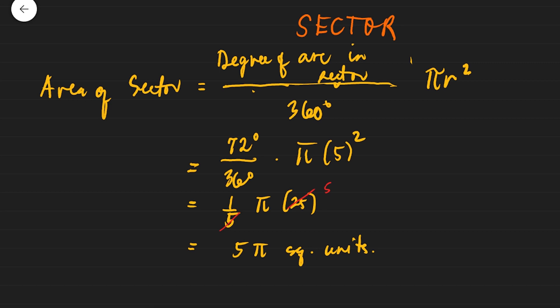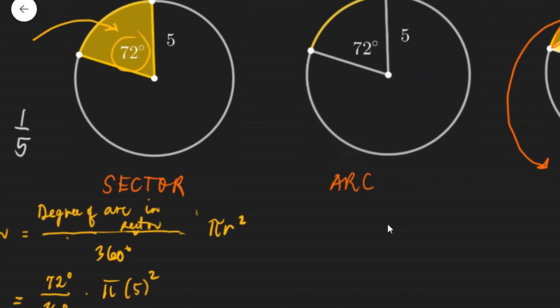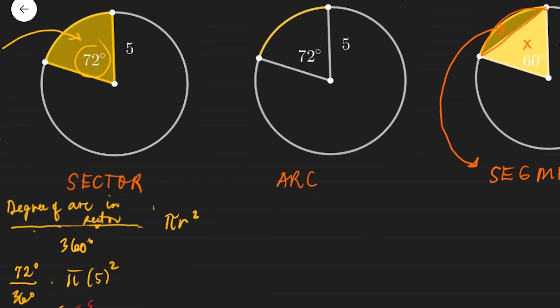The formula for the area of the sector is: degree of arc in sector divided by 360 degrees, times pi r squared. Now we'll do the same approach for arc length. The circumference formula is 2 pi r or pi d. For arc length, note that the degree measure depends on the central angle that intercepts it. For this case, the yellow arc also measures 72 degrees, and we want to find how long the arc is.